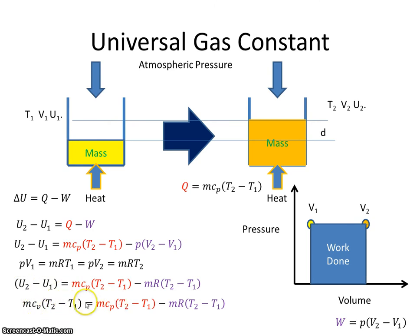We now have M on both sides, and we have T2 minus T1 on both sides. So if we cancel out, we get Cp minus R is equal to Cv, and just rearranging that then, I get Cp minus Cv is equal to R. So that is showing us that the universal gas constant is equal to specific heat capacity at constant pressure minus specific heat capacity at constant volume.